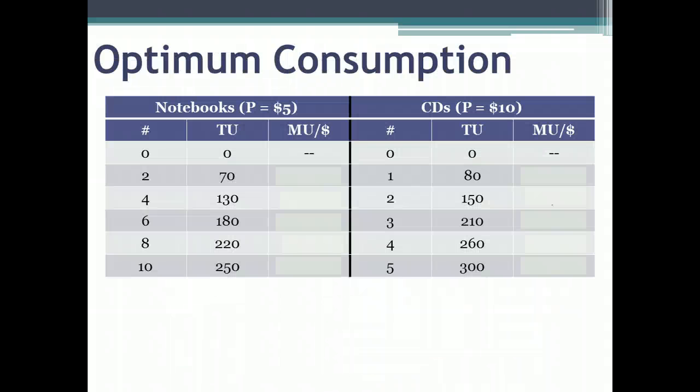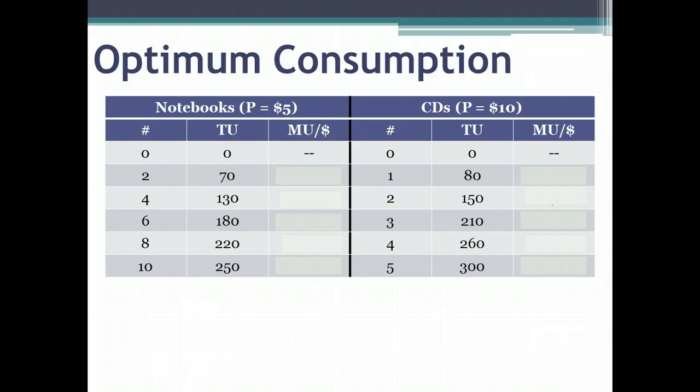What we're going to do is something similar to what we've already done in the past. We have looked at the optimum consumption of different products. If you think way back to when we talked about consumer choice, we said that in order to decide how many notebooks and CDs to purchase, we would have to look, for example, at the marginal utility per dollar spent to make sure that you're getting the greatest bang for your buck. So that for every dollar you spend, you're maximizing the total utility or marginal utility that you receive.